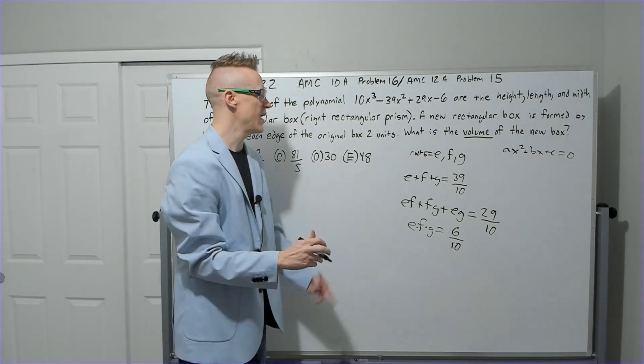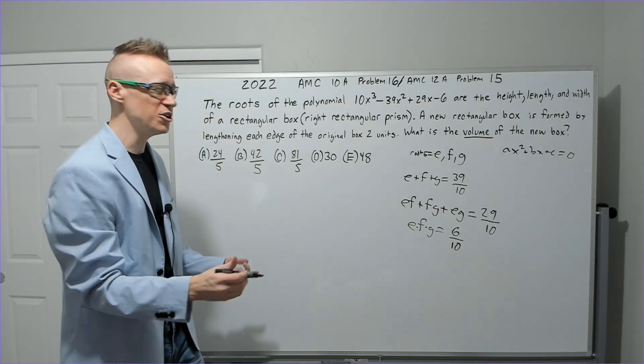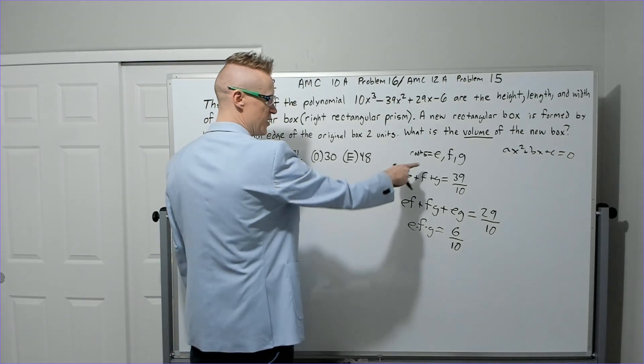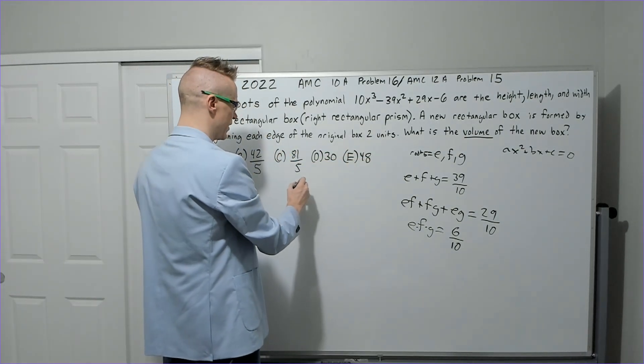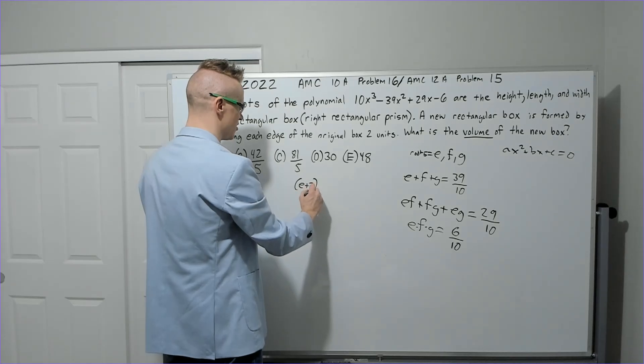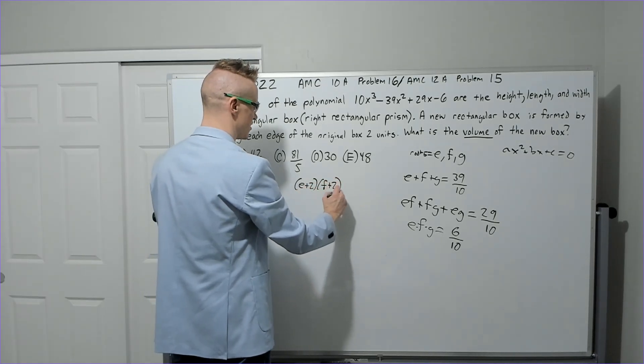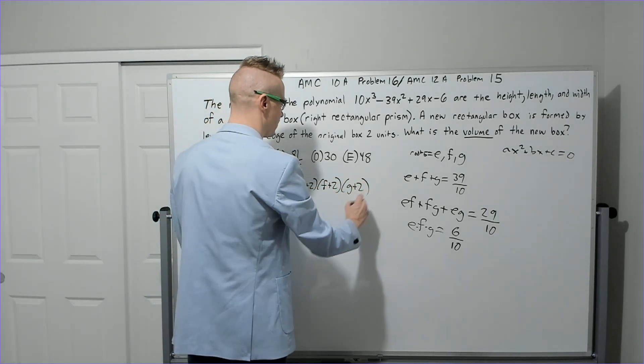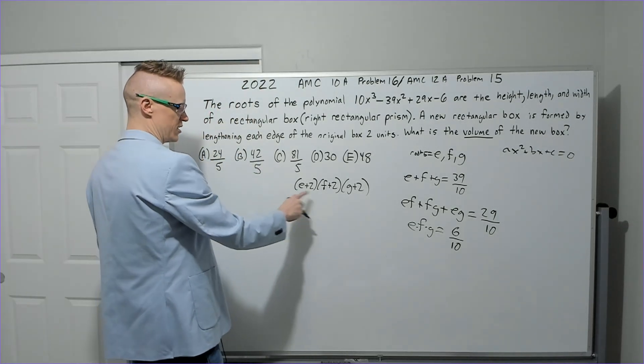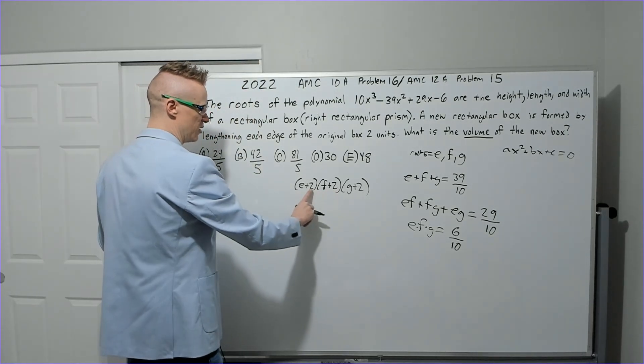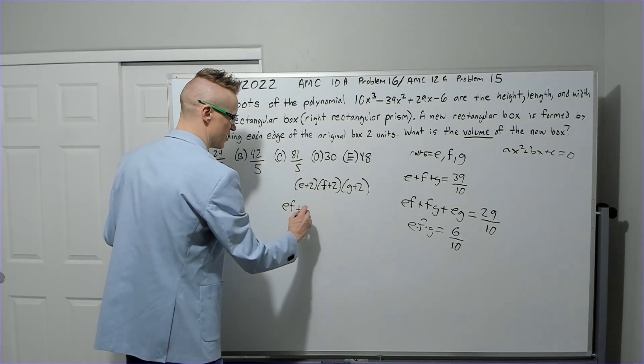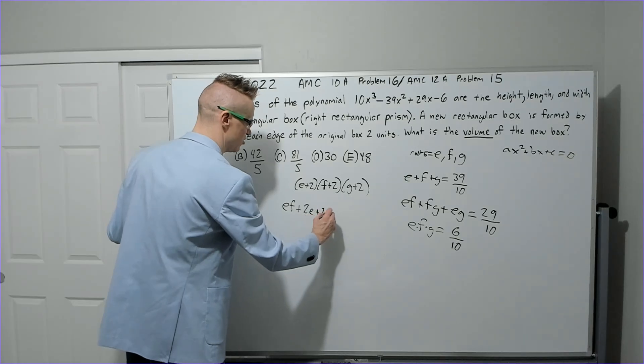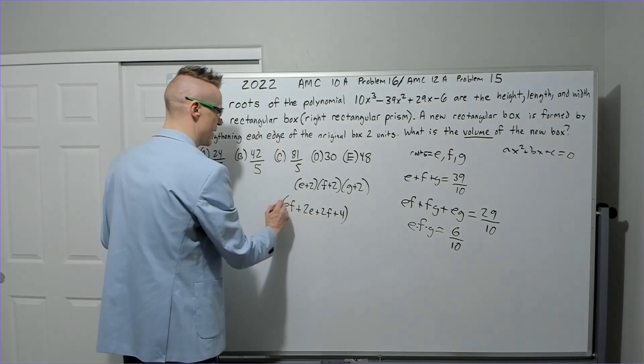Okay, so these are our pieces. Now what? Well, we want the volume of a new box. If the roots are all going to be lengthened by 2, we're going to multiply (e + 2) times (f + 2) times (g + 2). And now you're going to distribute this. I'm just going to do it in a normal way. (e + 2)(f + 2) will give me ef + 2e + 2f + 4.